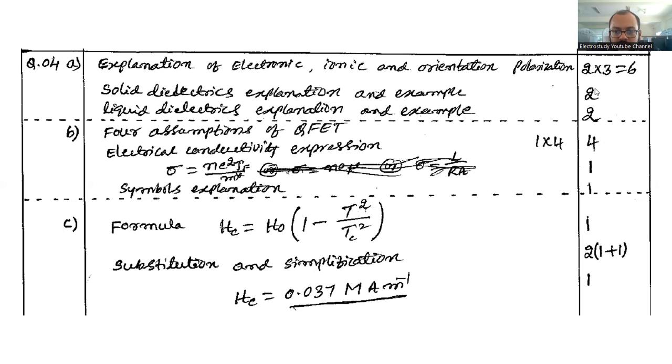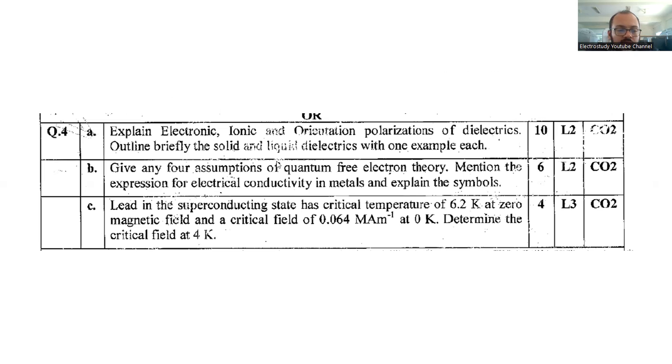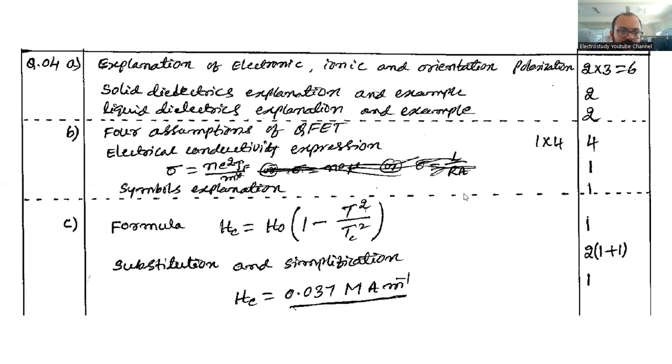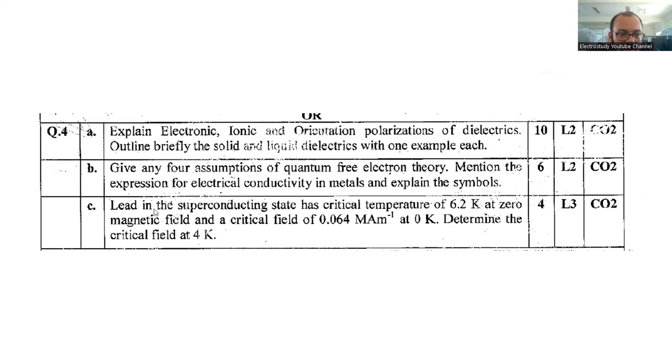Give any four assumptions of equation of free electron theory. Mention the expression for electrical conductivity in metals and explain the symbols. For assumptions you have to mention, electrical conductivity expression σ = ne²τ/m. Weightage is four marks for assumptions, symbols and explanation one mark like that you have to elaborate.